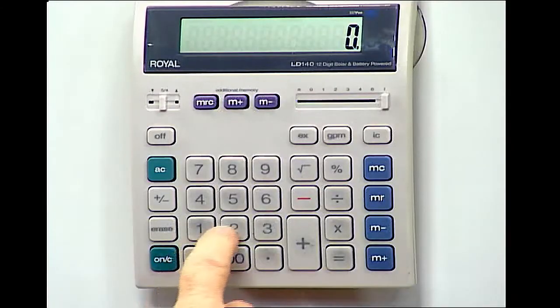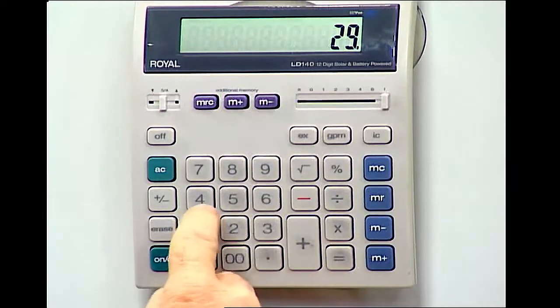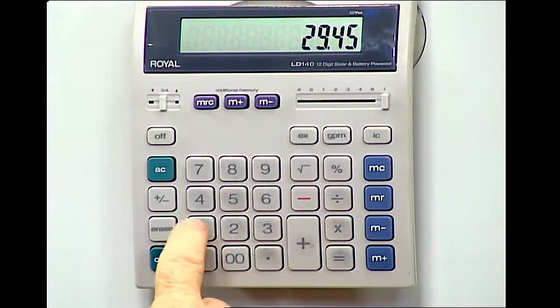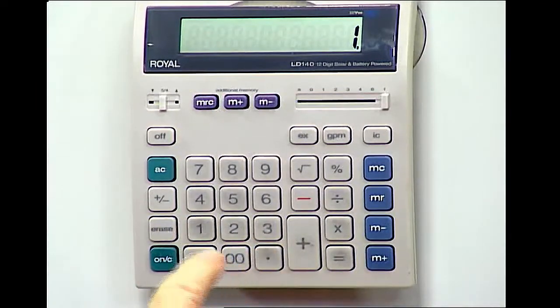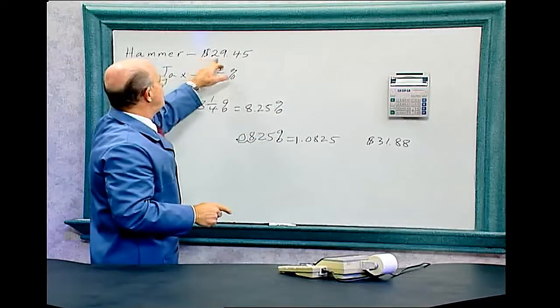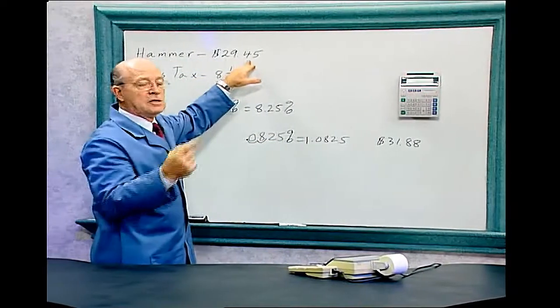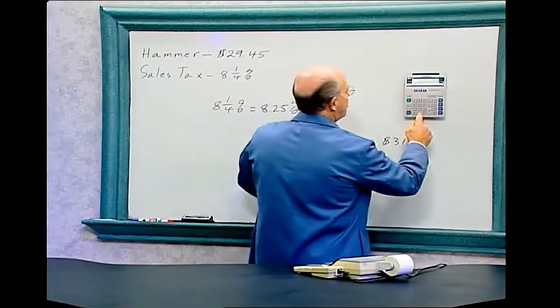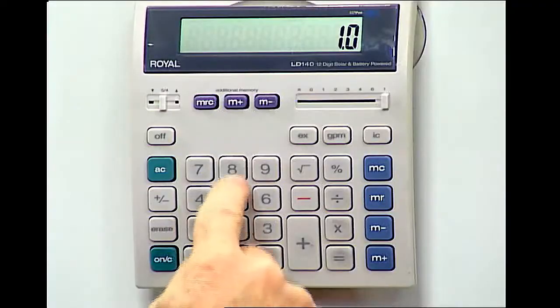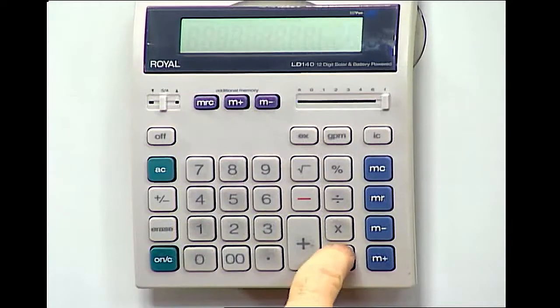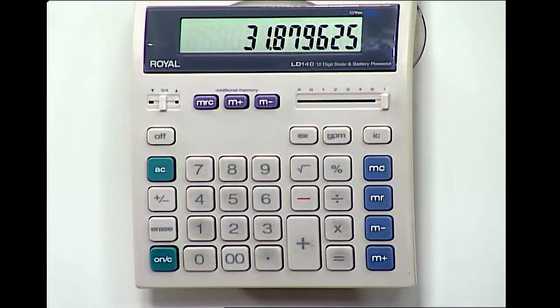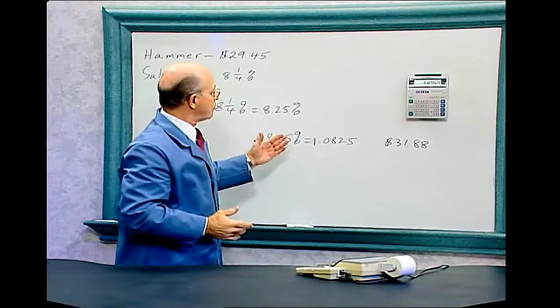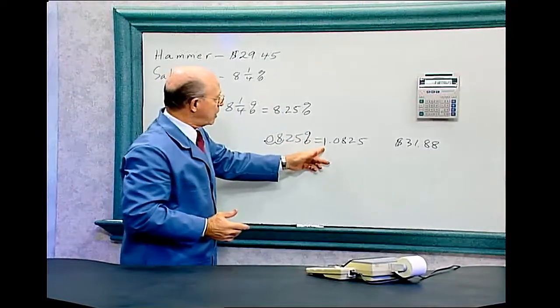Clear it. We'll put the price of the hammer into the calculator. Twenty-nine dollars and forty-five cents. And now we're going to multiply that. And we're going to put one point. Now when we do that, we're actually already put the price into the calculator. Now we'll put the sales tax into the calculator. And that's point zero eight two five equals, and we get the same number, thirty-one dollars and eighty-eight cents. So that's a quick way of doing that. When you have to multiply, just add a one in front of it.